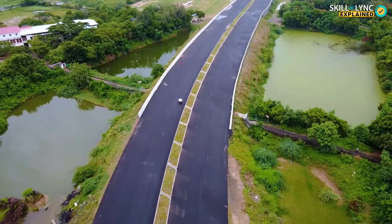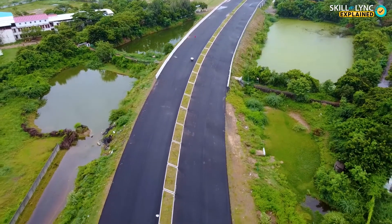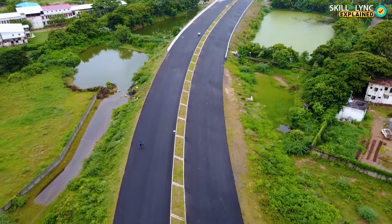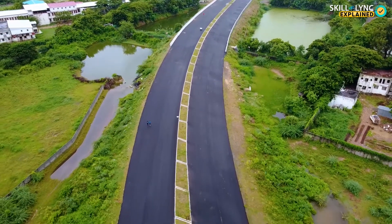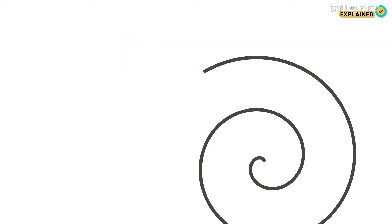Designing curved roads is not just about banking — it's also about transitioning from a straight road. If you are traveling on a straight road and enter a curve that is rather abrupt, you are likely to lose control over the vehicle, because the centrifugal force takes over suddenly. In order to counteract this, curved roads follow the arc of a spiral in which the change in radius is gradual rather than constant as in a circle. This allows for a smoother turn. So the next time you're driving, keep an eye open for all the amazing engineering that goes into building our roads.